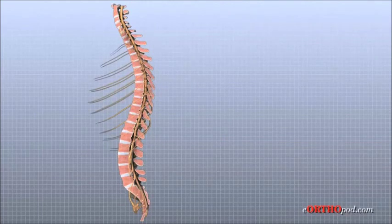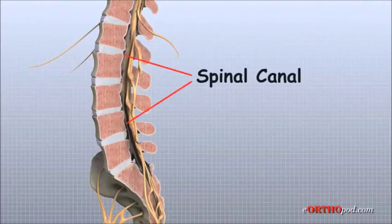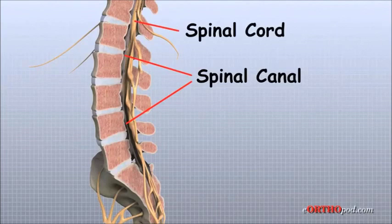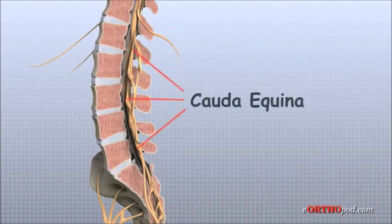The spinal cord extends from the brain to the L2 vertebra. Below this level, the spinal cord splits into a bundle of nerves that goes to the lower limbs and pelvic organs. The Latin term for this bundle of nerves is cauda equina, meaning horse's tail.